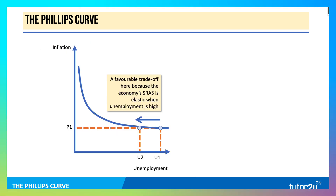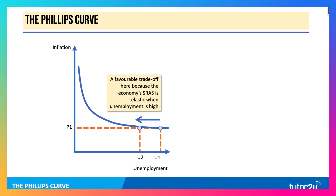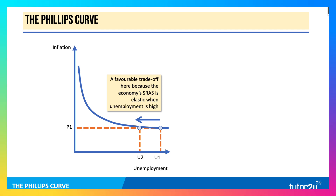Here is the diagram: inflation on the y-axis, unemployment on the x-axis, both measured as percentages. In this diagram, there's a favourable trade-off because the short run aggregate supply curve is assumed to be elastic, so unemployment can fall from U1 to U2 without there being a rise in inflation.